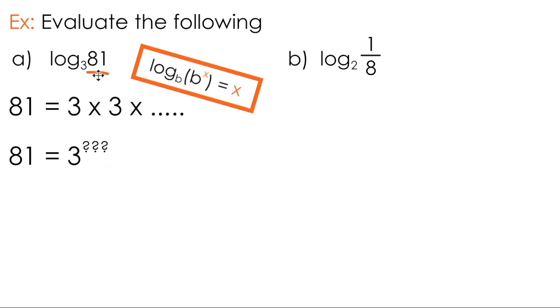Remember, if I can write 81 as a base of 3, I'd have log base 3 of an exponential of base 3, allowing me to just have my exponent. Either through trial and error or a little bit of mathematical intuition, you'll see that you can turn 81 into 3 to the power of 4. I can now apply my conclusion, which says if I have the log base 3 of 3 to the power of 4, the log and the exponential undo each other and I'm left with just the exponent, 4.